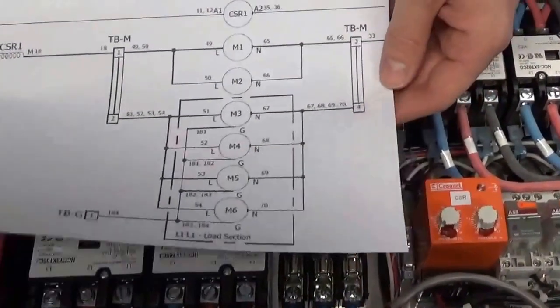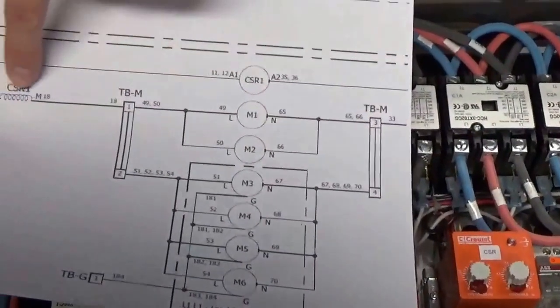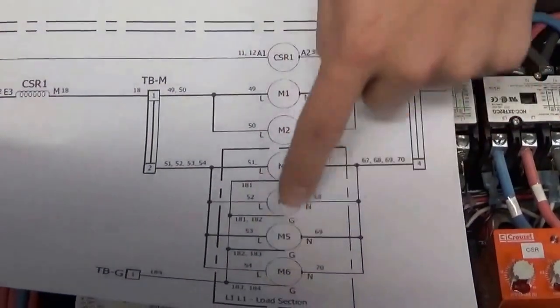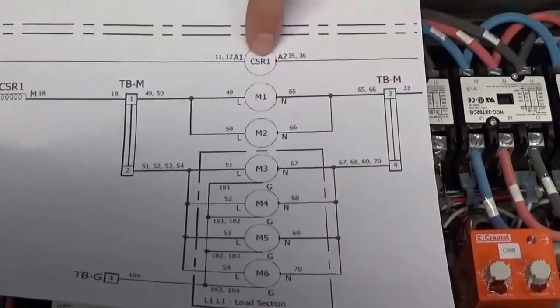First of all, I just have a drawing here. This is our main power coming in. The CSR is going to measure all currents of the six fans, and here we have the CSR coil.